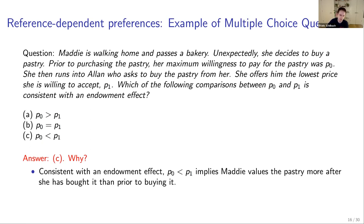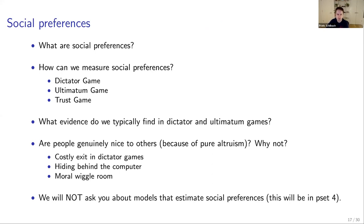The third broad topic is social preferences. We didn't quite finish this, so we won't cover lecture 13 or the estimation part of social preferences. You should understand what social preferences are and how to measure them in lab games — the Blink (Dictator) game, the Dictator game, the Ultimatum game, and the Trust game. You should be broadly familiar with the typical evidence from Dictator and Ultimatum games — for instance, people tend to give around 20–30%.